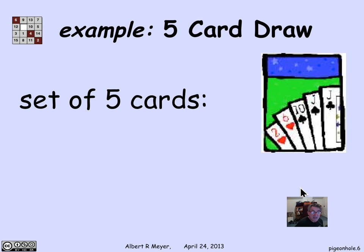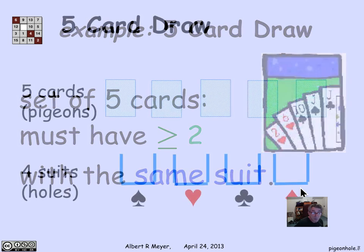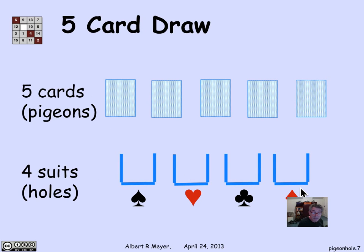But we will take a much more modest application of the pigeonhole principle. Namely, if I have a set of five cards, then I have to have at least two cards with the same suit. Why? Well, there are four suits: spades, hearts, diamonds, clubs, indicated here. And if you have five cards, there's more pigeons' cards than suits' holes.